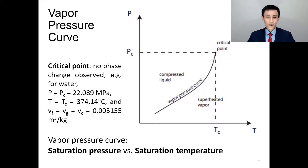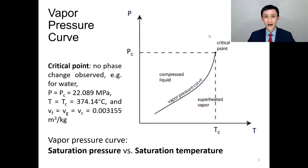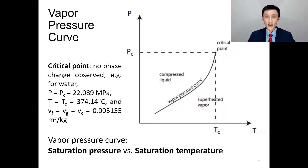In order to determine the phase in thermodynamics, we are going to use the vapor pressure curve. The y-axis is pressure, the x-axis is temperature, and we draw a curve — we call it the vapor pressure curve.